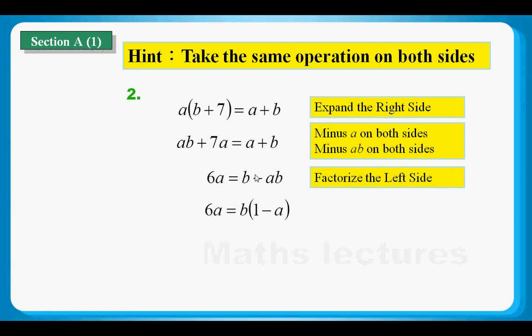And then we divide both sides by 1 minus A. We divide both sides by a polynomial. We have the final result, which B is the subject of this formula.